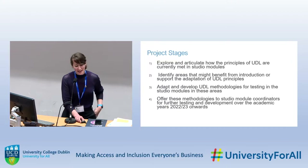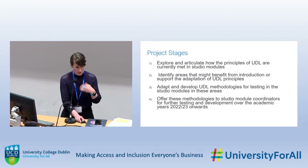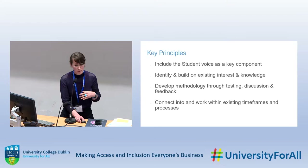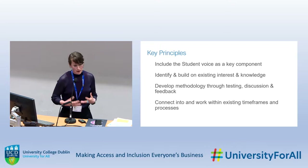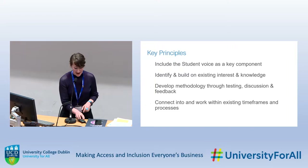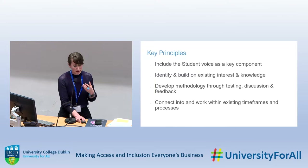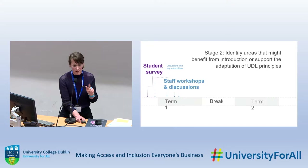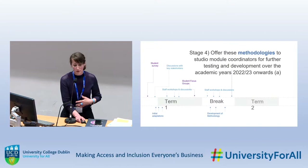I've worked the project into four overlapping stages. The key principles important to get across are: design is a collaborative practice, and Universal Design for Learning is also a collaborative practice. The first and key component is including the student voice in everything that we do. Identifying and building on existing interest and knowledge — we're not reinventing the wheel. There's a lot of interest in inclusive teaching, but there's also a lot of expertise and we don't realise it. Developing the methodology through testing, discussion and feedback using a design process, and then connecting and working into existing time frames — existing discussions, end of term reviews, student surveys.